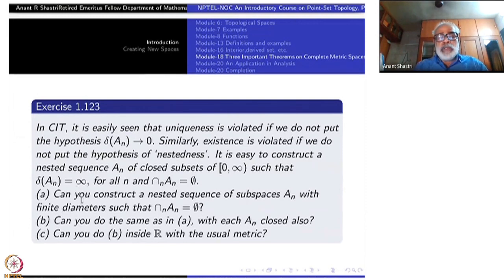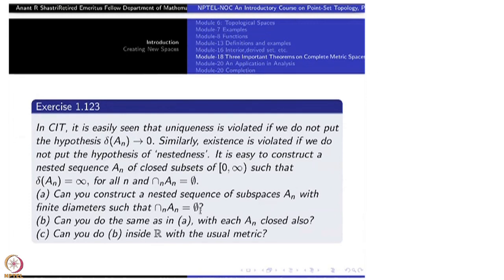Here another question is there. Can you construct a nested sequence of subspaces A_n with finite diameters such that intersection of A_n is empty? You can do it in R itself actually. But this time I am putting nested sequence, diameters also finite. I am not saying diameters are converging to 0. But what I am not saying is that they are closed. There is no word closed here. So is it possible?